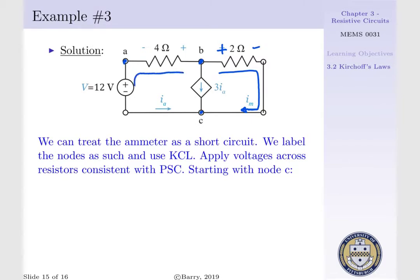IA is assumed to travel through our 4 ohm resistor, our 12 volt source, and then to node C, such that we can assign the following polarity.